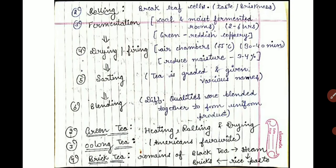After withering comes rolling. Withered leaves are rolled in rolling machines so that the cells of the leaves break. As the cells break, a new form develops — fermentation begins and the leaves develop a taste and briskness.